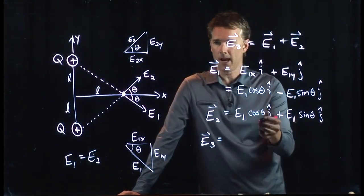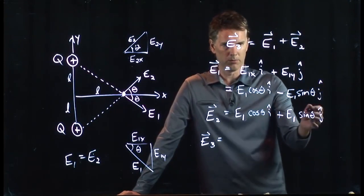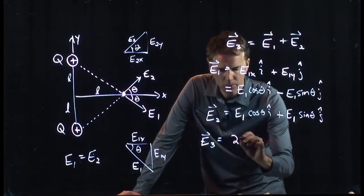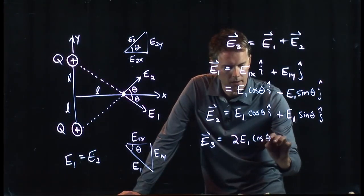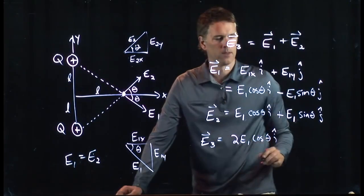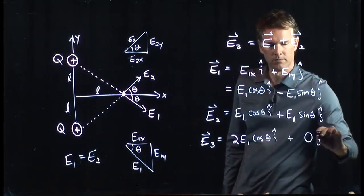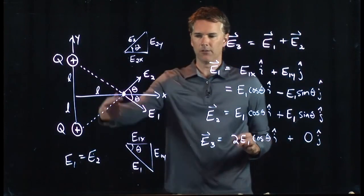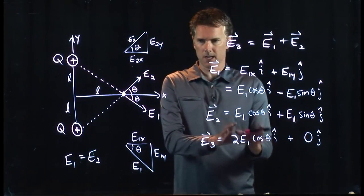And now when I add them up, look what happens. This one doubles. This one goes away. Okay. And so we get 2 E1 cosine theta, i-hat, plus 0 j-hat. It's all in the horizontal direction.